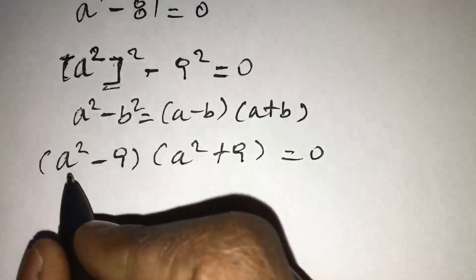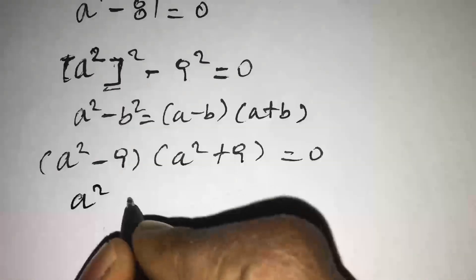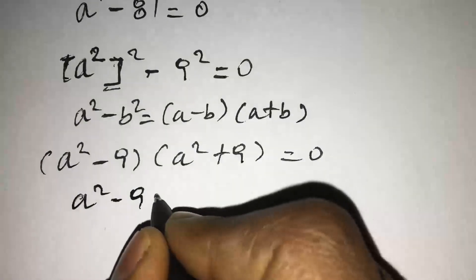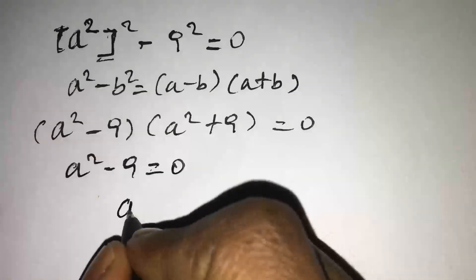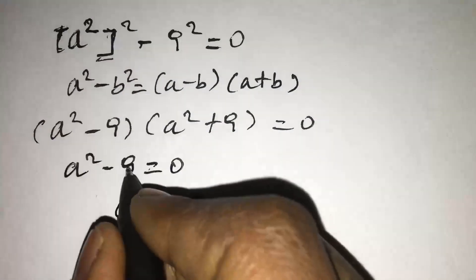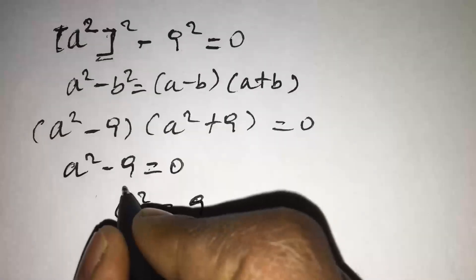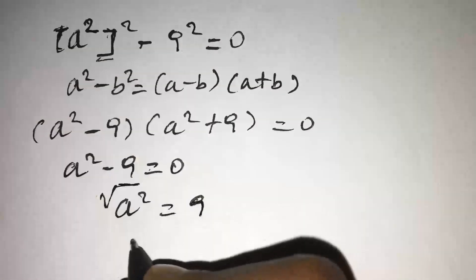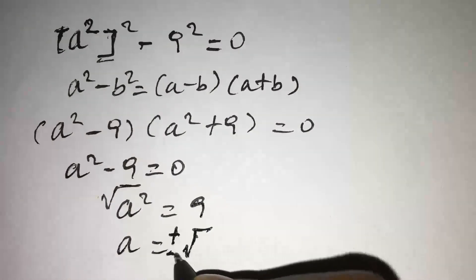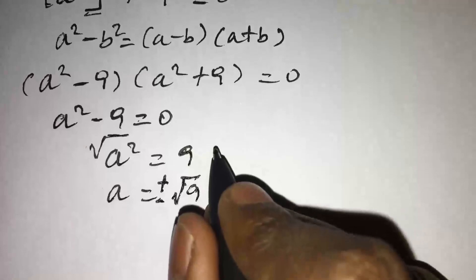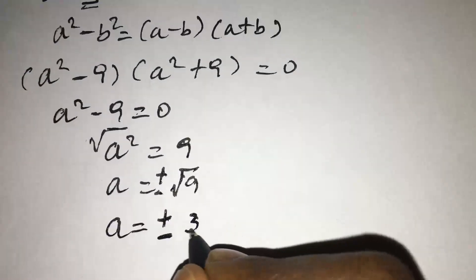Here we have two cases. In the first case, A squared minus 9 equals 0, so A squared equals 9. Taking the square root of both sides gives A equals plus or minus the square root of 9, so A equals plus or minus 3.